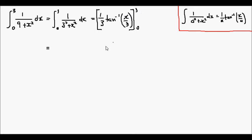And to evaluate that, we just substitute 3 for x minus the expression with 0 for x. So 1 over 3, inverse tan of 3 divided by 3 minus 1 over 3 times the inverse tan of 0 over 3.